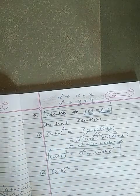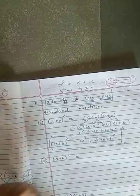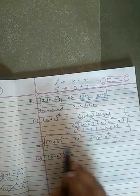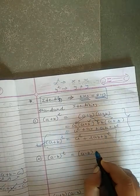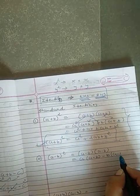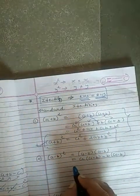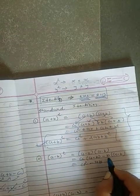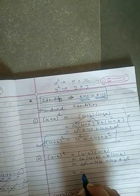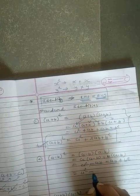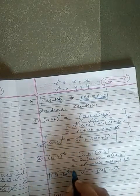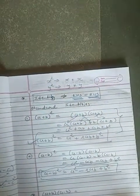Similarly, (a - b) whole square — see the change: here positive sign, here negative sign, only this much change will come. No need to remember this process, just remember the formula because it is called an identity. a minus b will multiply with a minus b. So a into (a - b), then minus b into (a - b). Now: a into a = a², a into b = minus ab, b into a = minus ab, and b into b = plus b² (because minus minus is plus). Now a²: both ab terms are negative so addition happens but remains negative: minus 2ab. So this is your second identity: a² - 2ab + b².